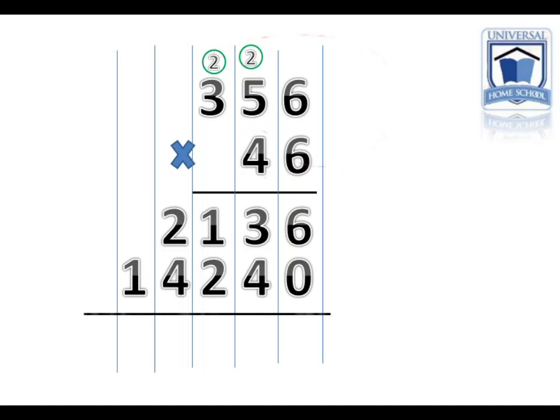Now we add these two numbers up. 6 plus 0 equals 6. 3 plus 4 equals 7. 2 plus 1 equals 3. 4 plus 2 equals 6. And 1 plus 0 equals 1.